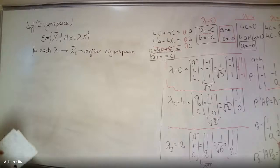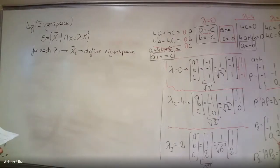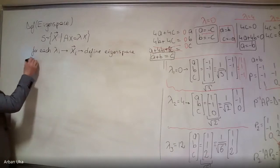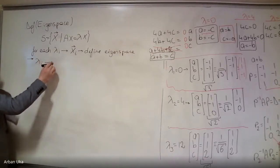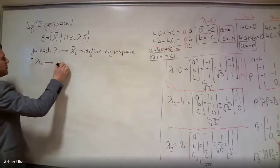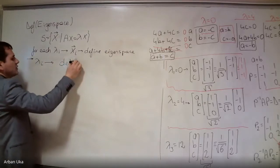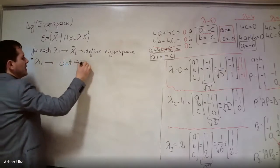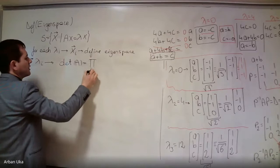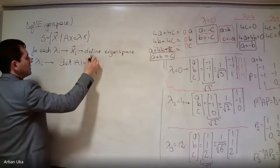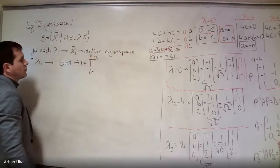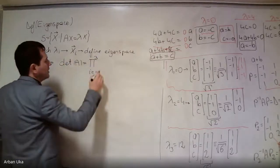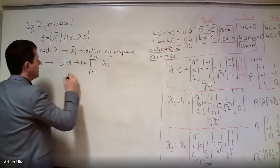With examples, we'll try to make this a little more clear. After the definition of the eigenspace, we have some important relations regarding the eigenvectors and lambda i. One of the essential properties is that the determinant of any matrix A is equal to the product of all the eigenvalues lambda i, from 1 to n.